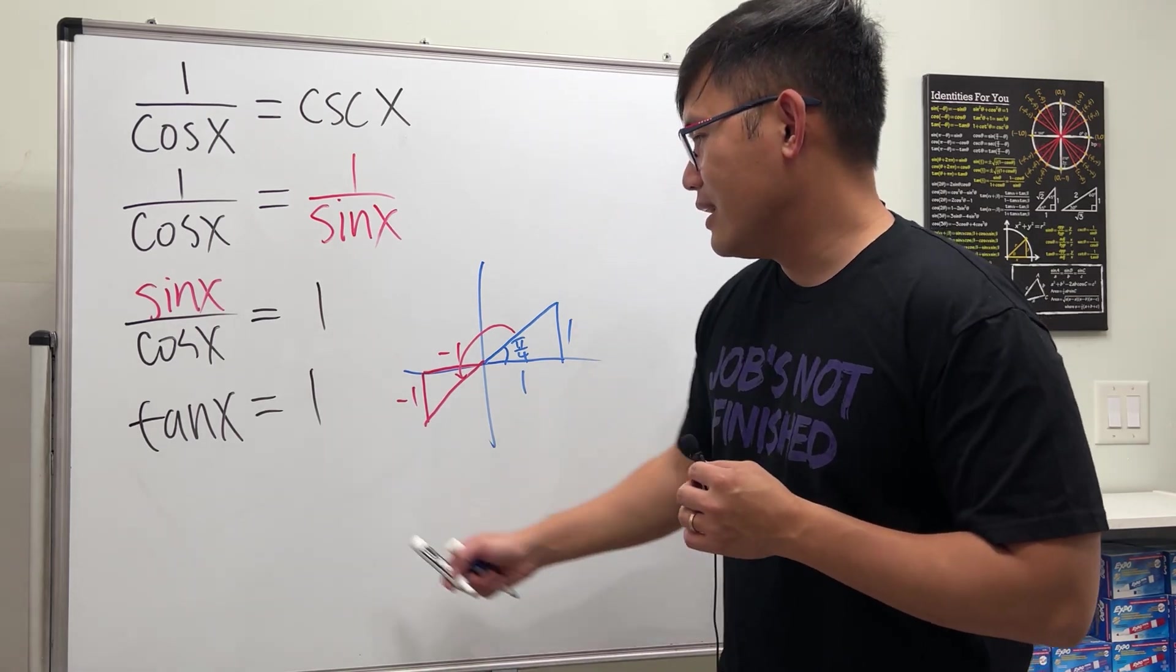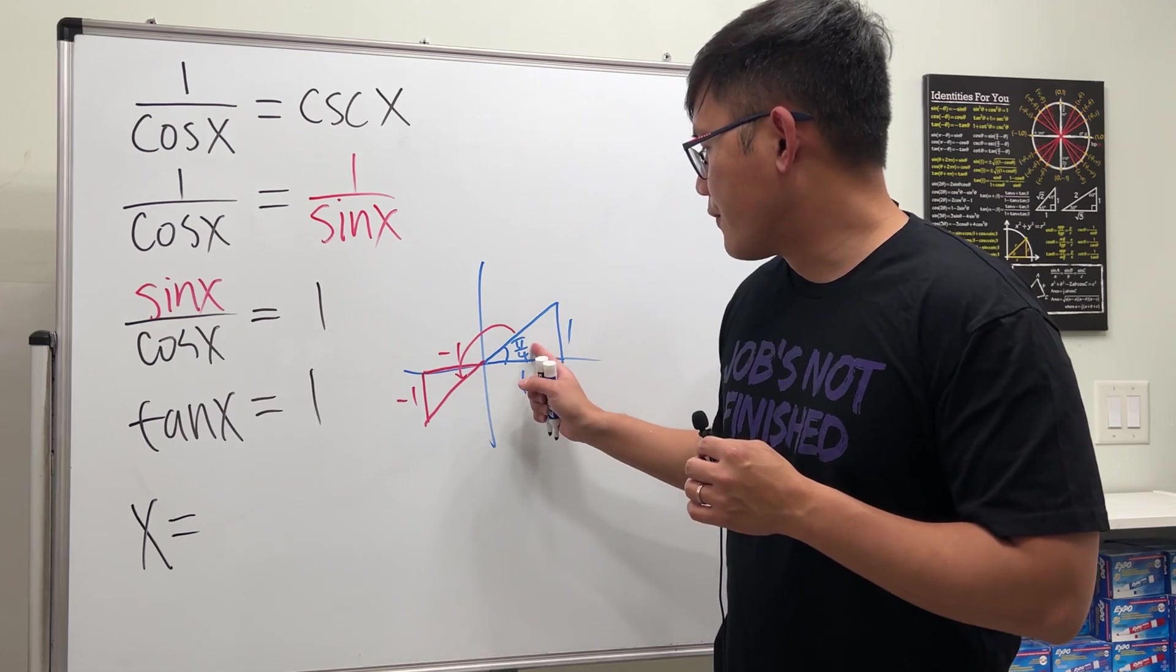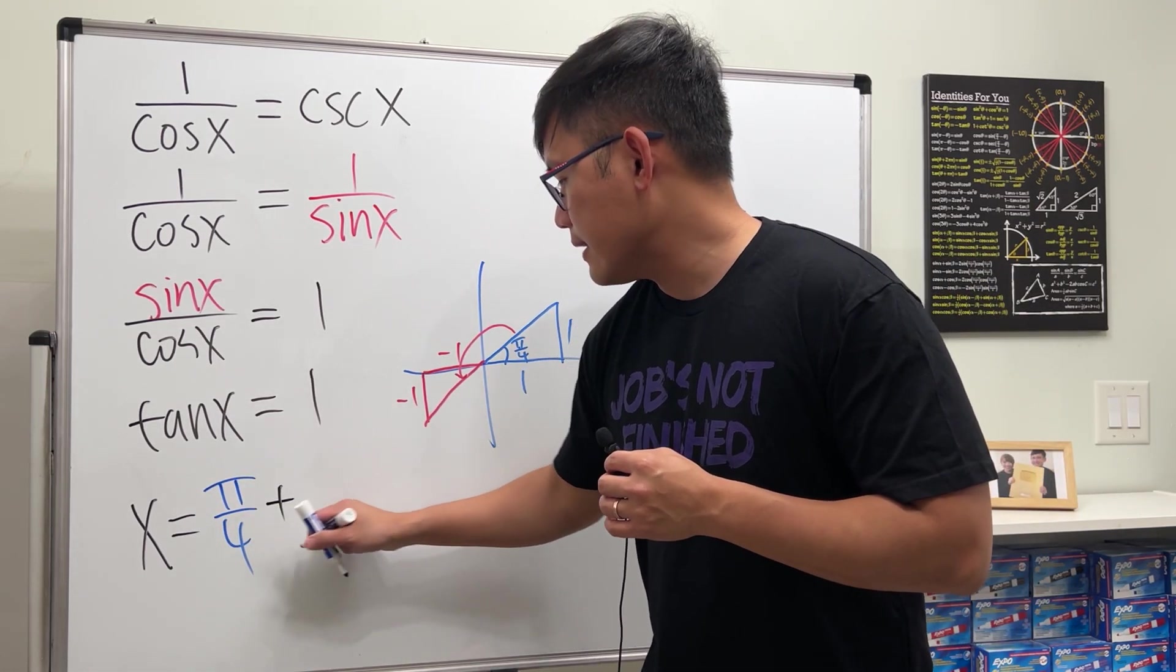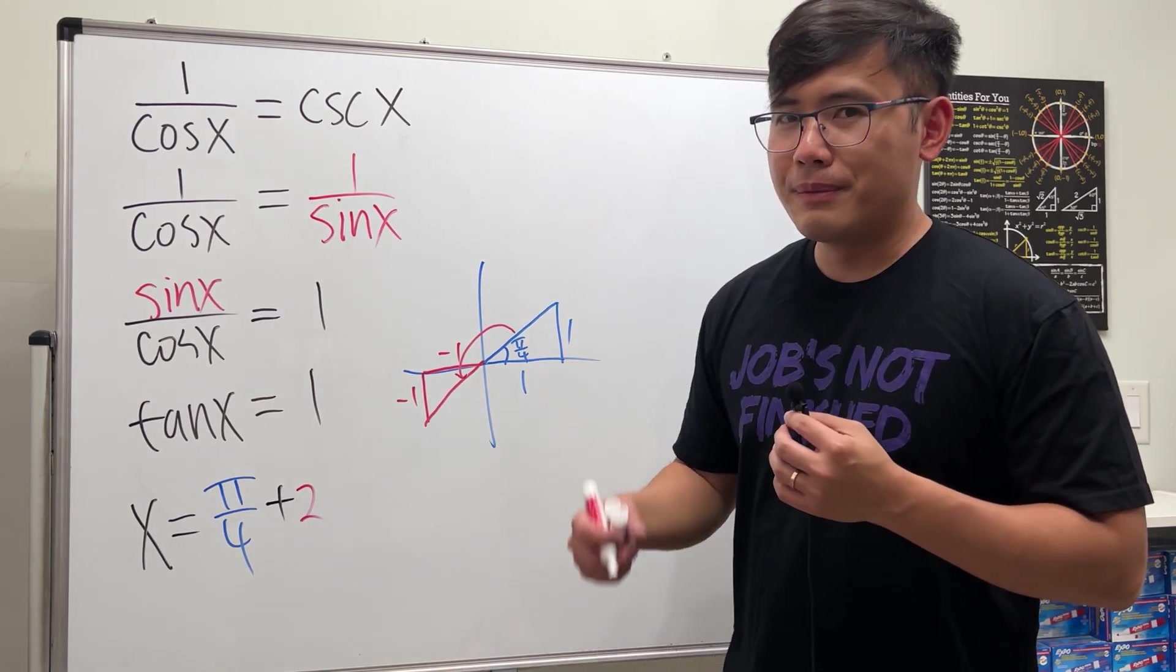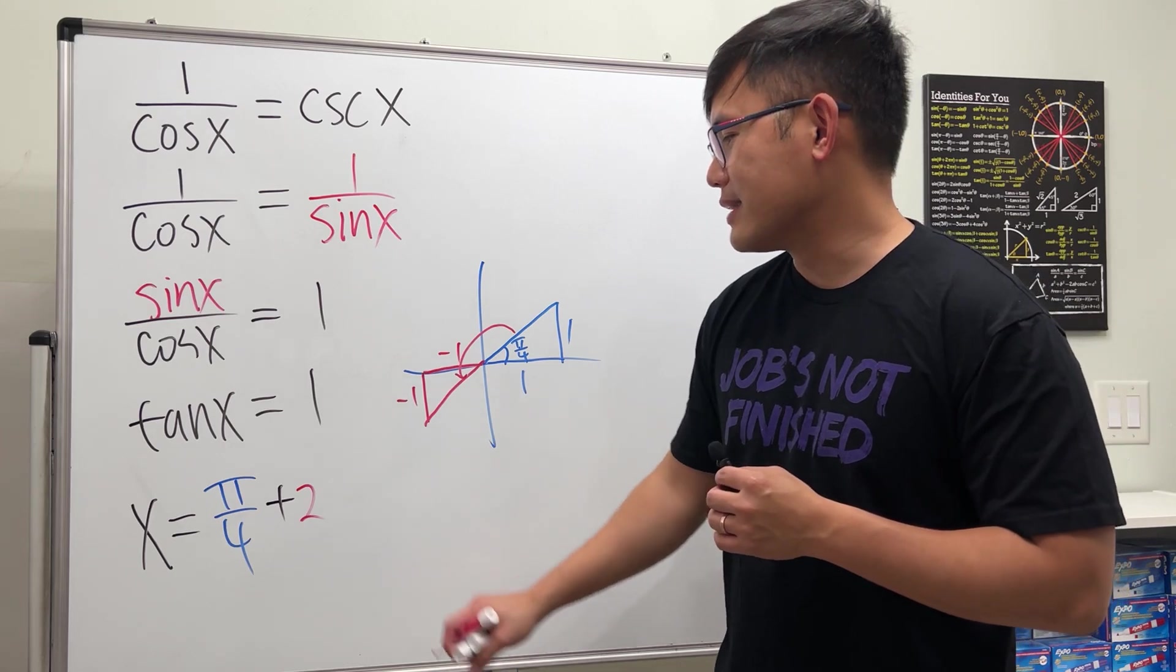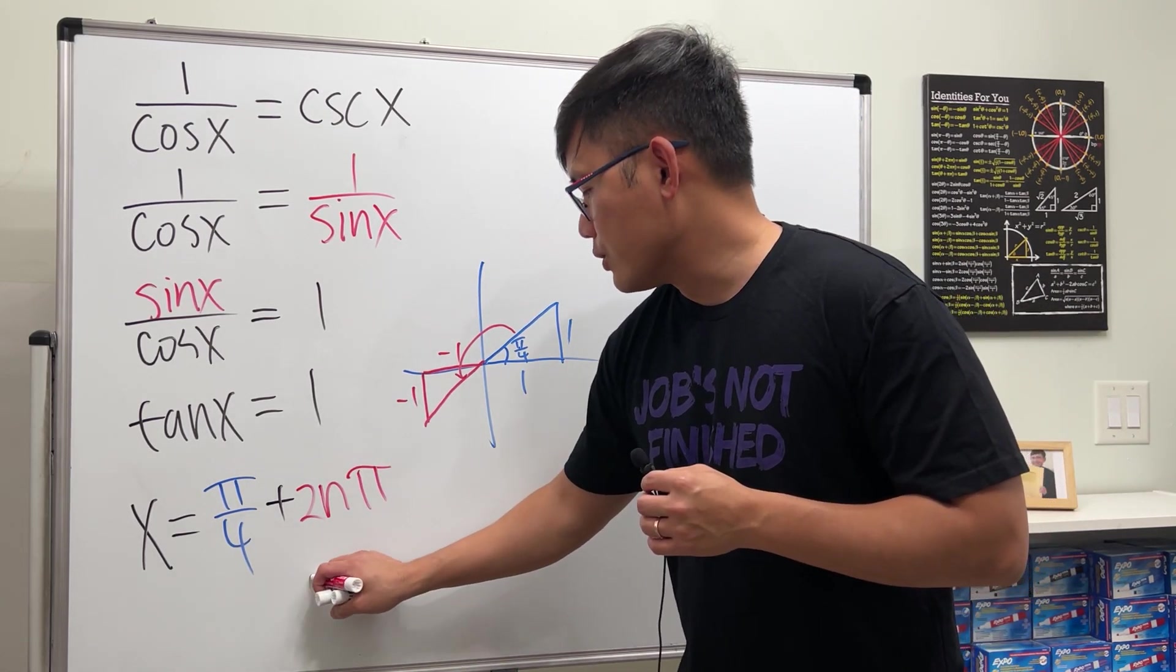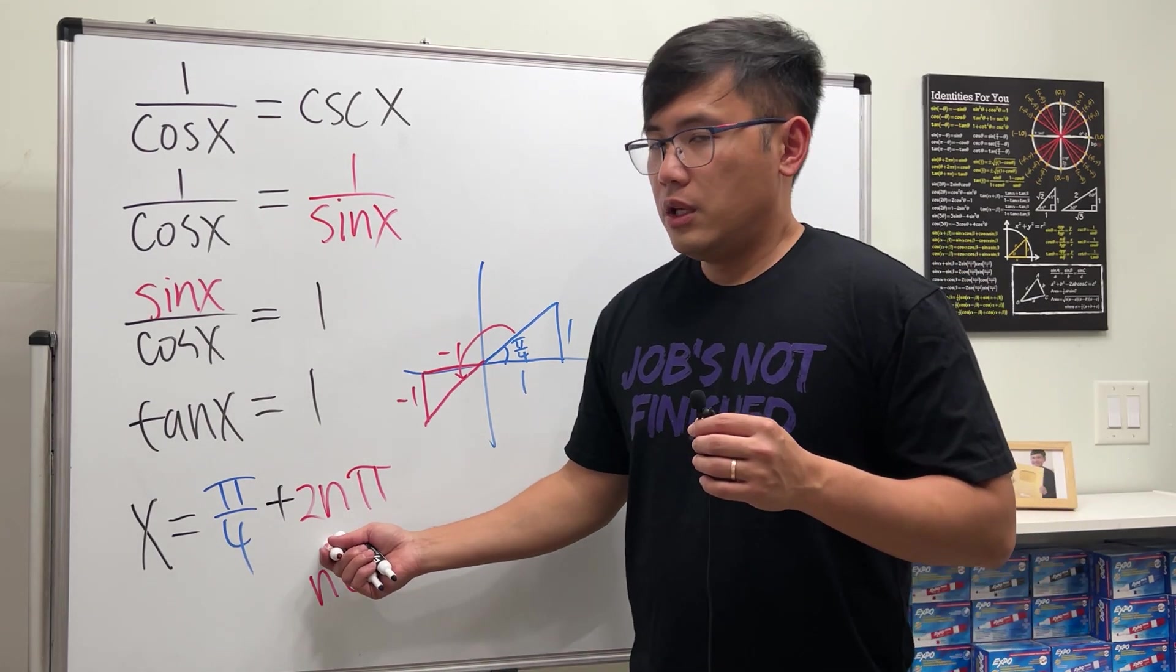So as you can see, in order for this to be true, x just has to be π/4. And then we just have to add, let's put 2πk or 2nπ or whatever you guys like. Usually I put 2nπ, and then it should also tell you that n is an integer.